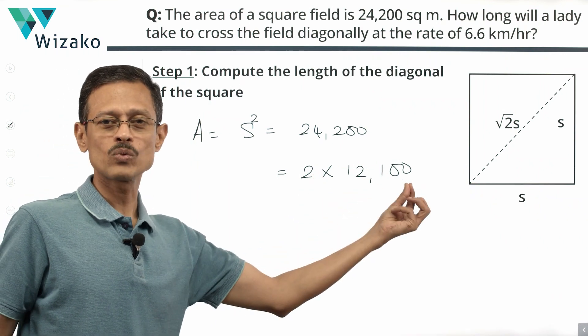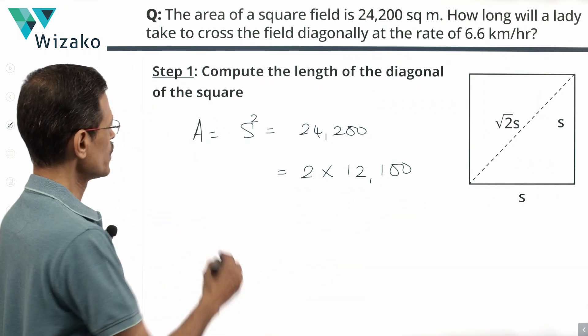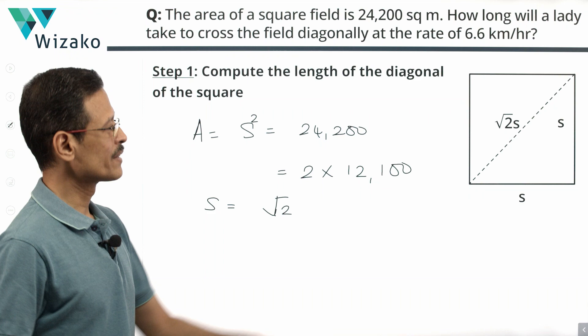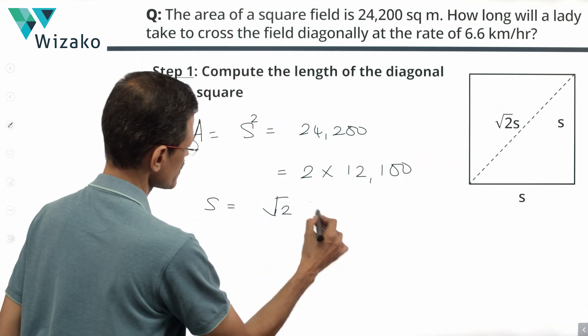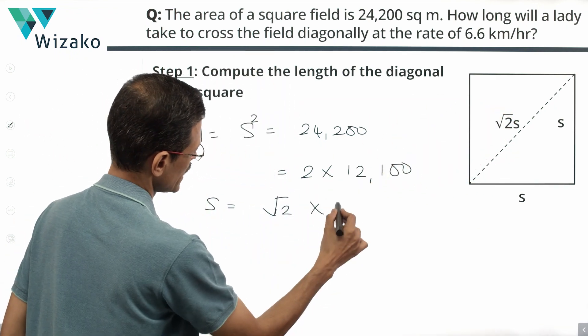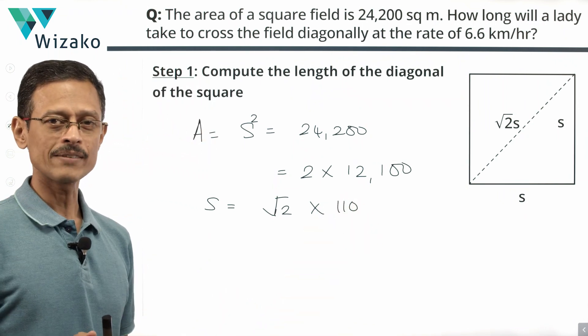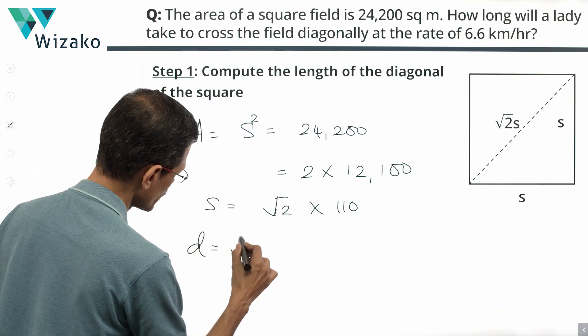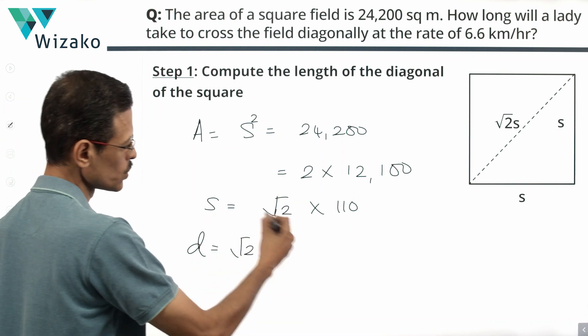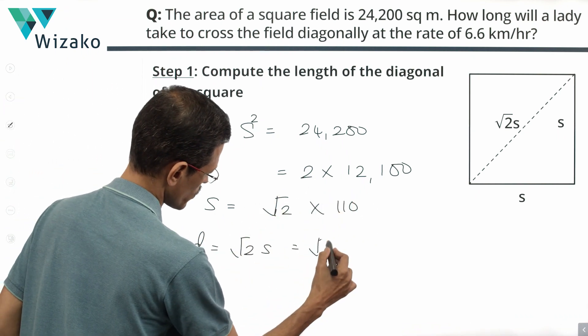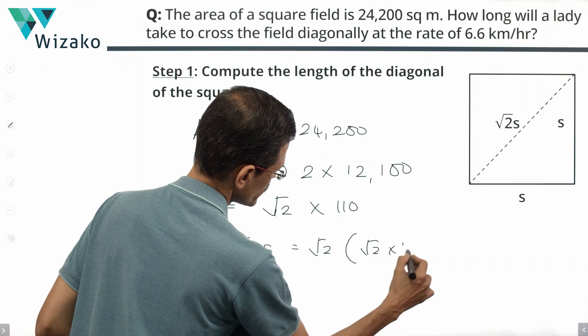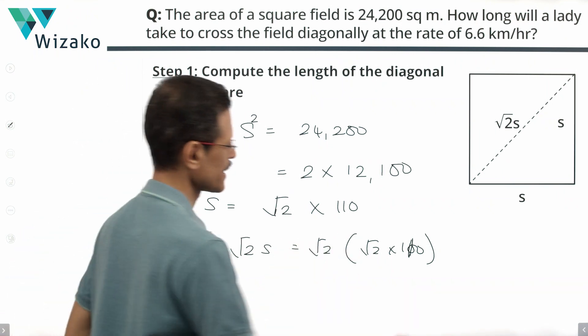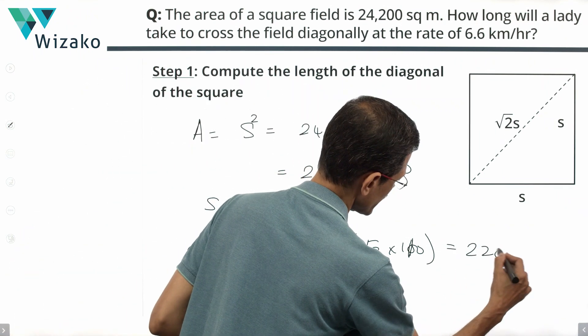121 is the square of 11. 12,100 therefore is the square of 110. So the side of the square is going to be square root of this value. We'll keep this root 2 as root 2 because at the end of the day we're going to multiply it with one more root 2. This times square root of 12,100 is 110. So now we know the side of the square. The diagonal is root 2 times s, which is root 2 times root 2 times 110. Root 2 times root 2 is 2. 2 times 110 equals 220.